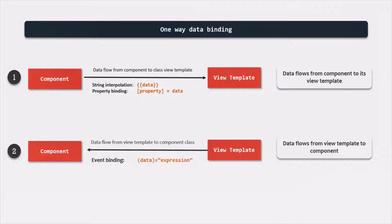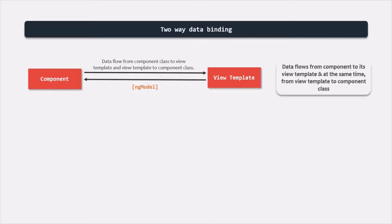Now we are going to talk about two-way data binding. In two-way data binding, we can bind data from component class to view template, and at the same time, data will be bound from view template to component class. Whenever we change a property in the component class, the changed value will reflect in the view, and whenever we change the value in the view, that changed value will be assigned to the property of the component class.